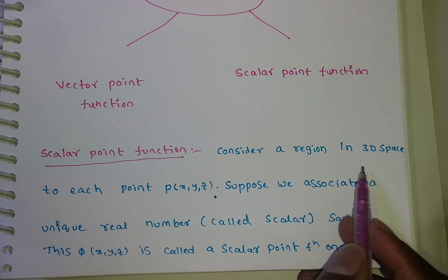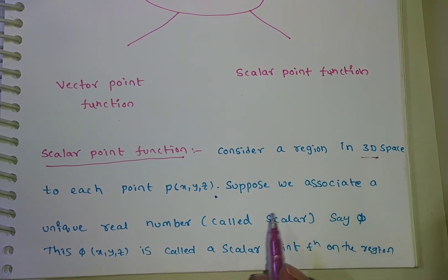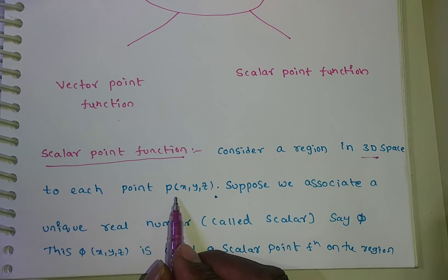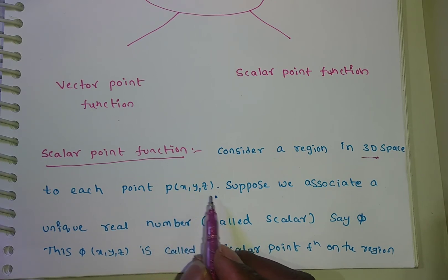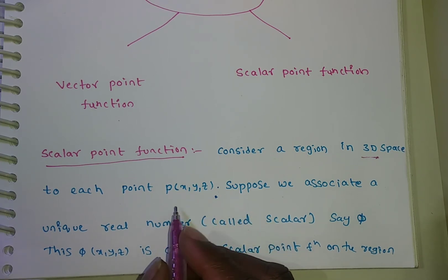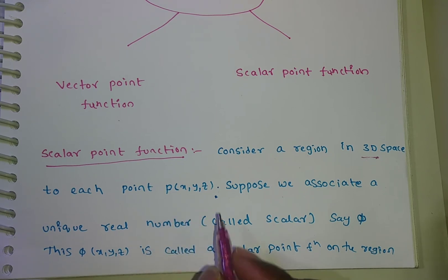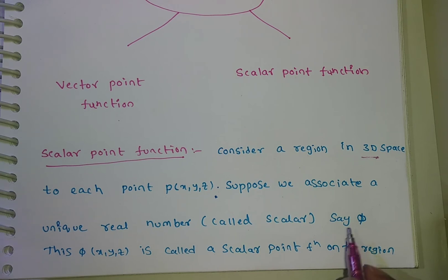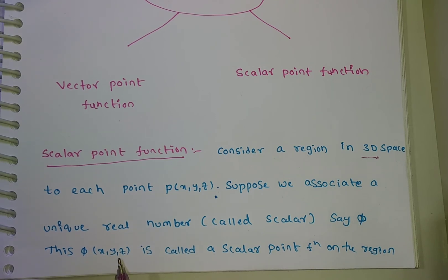We consider a three-dimensional space, that is why we have P of (x, y, z). If it is in two-dimensional space, then we simply stop with P of (x, y) only. We associate a unique real number, say phi of x, y, called a scalar point function on the given region. If it is three-dimensional, phi of x, y, z is called a scalar point function. In two dimensions, phi of x, y is called a scalar point function.